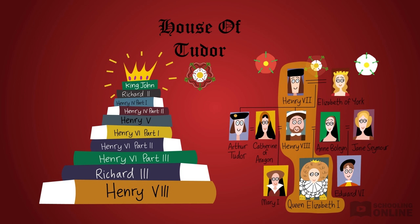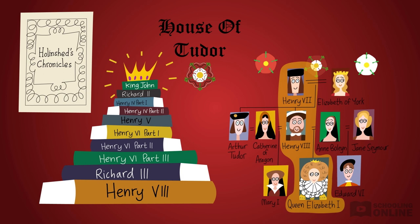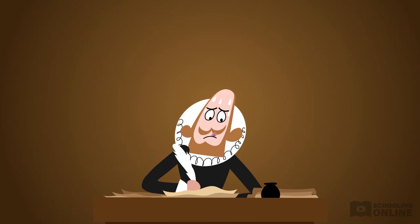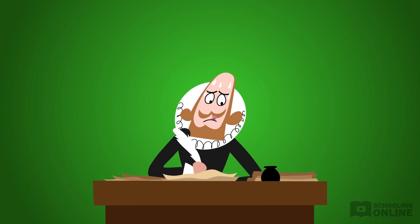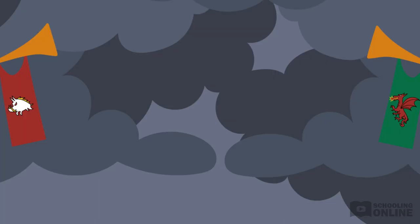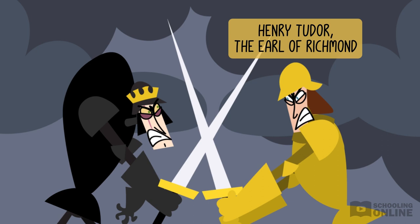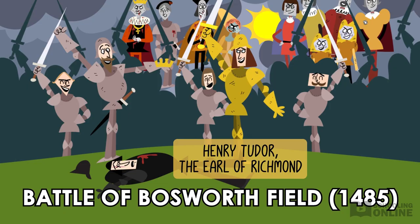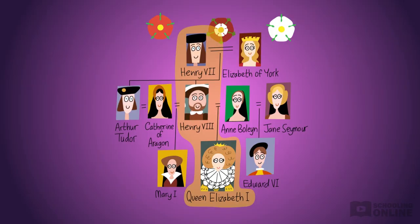Most of the historical sources that Shakespeare relied on were biased in favour of the Tudor dynasty. If Shakespeare had portrayed Richard, who was a Plantagenet — not a Tudor — as anything other than a villain, the Bard's own neck would have been at risk. The Tudors rose to power when supporters of Henry Tudor, the Earl of Richmond, killed King Richard III at the Battle of Bosworth Field. Henry Tudor became King Henry VII of England and was Queen Elizabeth I's grandfather.